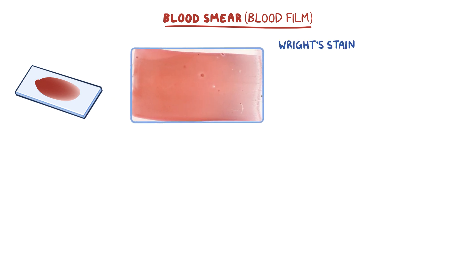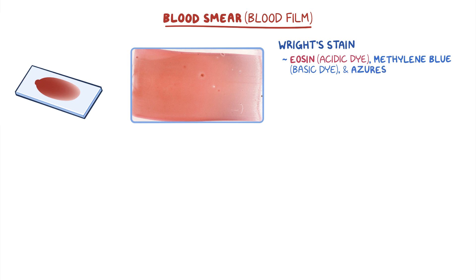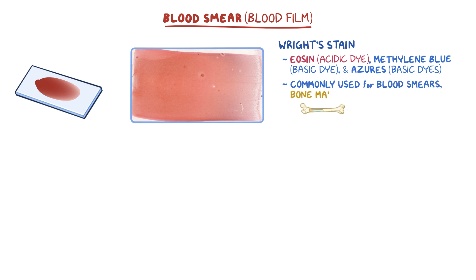This stain is a mixture of eosin, which is an acidic dye, methylene blue, which is a basic dye, and azures, which are also basic dyes. It's commonly used as a differentiating stain for blood smears, bone marrow, and blood parasites.